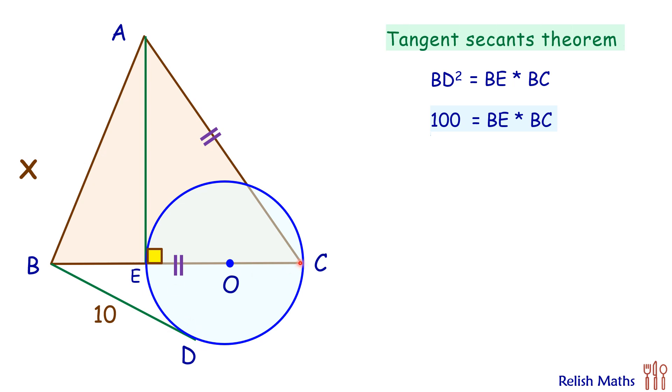Now let's drop a perpendicular from point C on AB. We know that in an isosceles triangle the altitude is also the median.